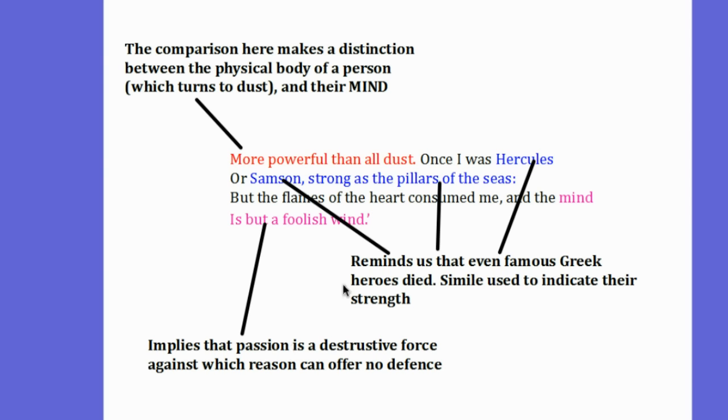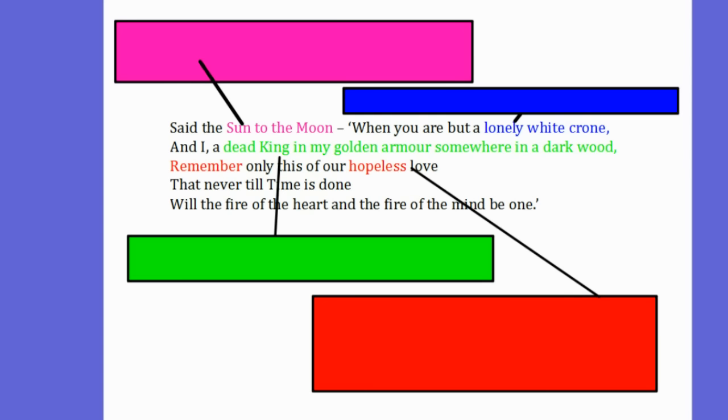The poem continues, Said the sun to the moon, When you are but a lonely white crone, And I, a dead king in my golden armour, somewhere in a dark wood, Remember only this of our hopeless love. That never till time is done, will the fire of the heart and the fire of the mind be one.